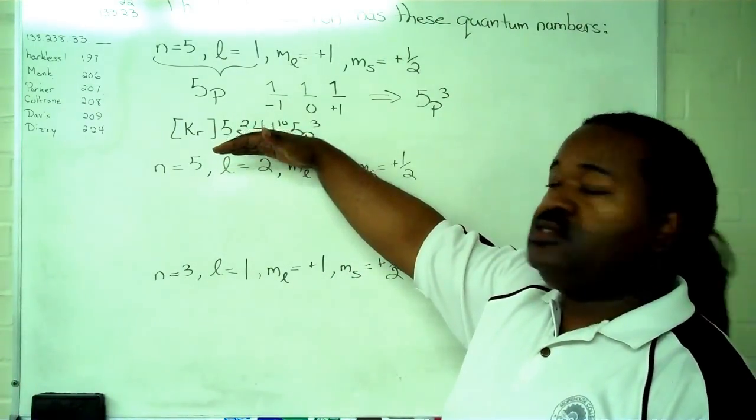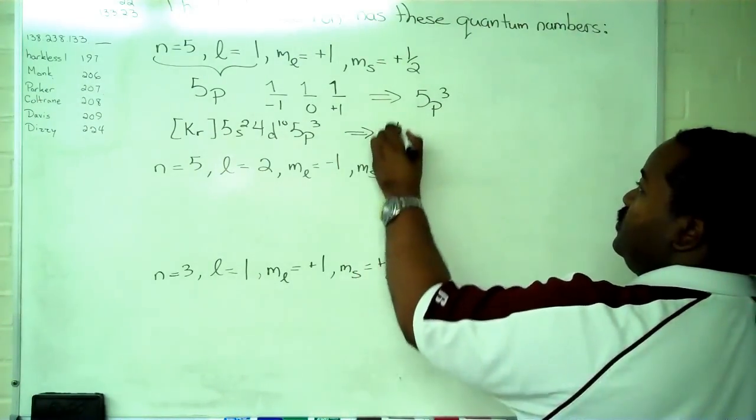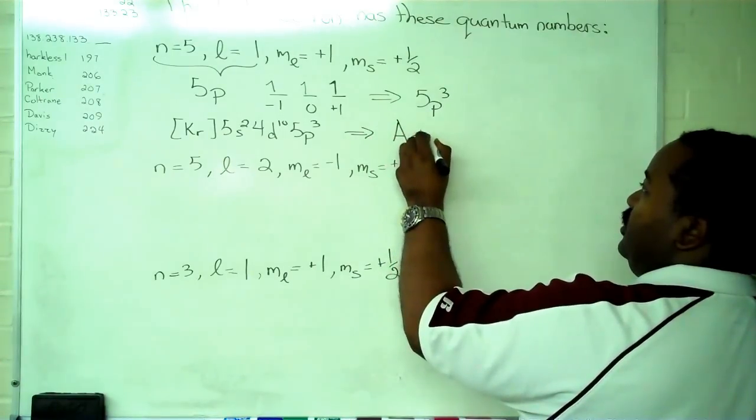And now that we have the configuration, all we have to do is use that to give us the identity of our element, and in this case, we're looking at antimony.